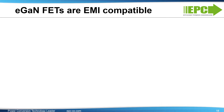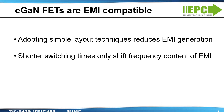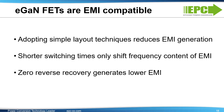In summary, eGaN FETs and ICs are EMI compatible. By adopting simple layout techniques, one can ensure significant reduction in EMI generation that adds zero cost to EMI mitigation. The higher switching slew rates only result in a shift in spectral content but do not increase EMI energy. At higher frequencies, EMI reduction techniques are more effective, ensuring lower cost to implement. Finally, eGaN FETs and ICs have zero reverse recovery and thus inherently generate less EMI energy in hard switching converters.